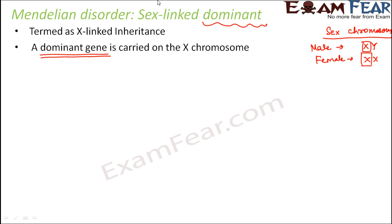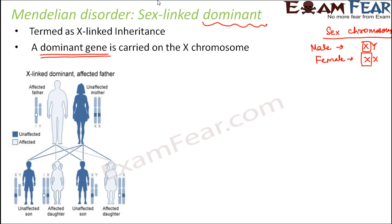This type of inheritance is determined by the sex of the parent carrying the specific gene. In Case 1, the father carries the defective gene and is therefore affected, while the mother is not affected. The father has a defective gene on the X chromosome, but he doesn't contribute this X chromosome to sons — sons get the Y chromosome from the father. So an affected father does not impact sons. However, this defective X chromosome gets transmitted to daughters, because daughters get one of their X chromosomes from the father. Therefore daughters end up with one defective X chromosome.